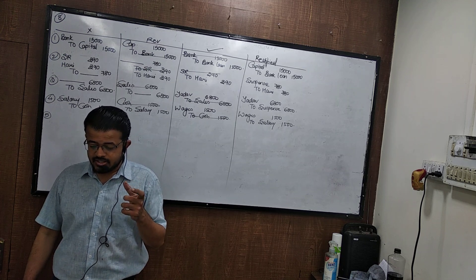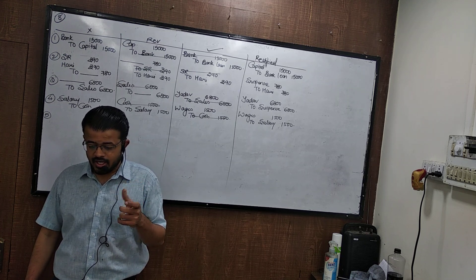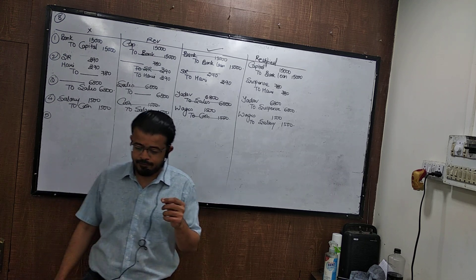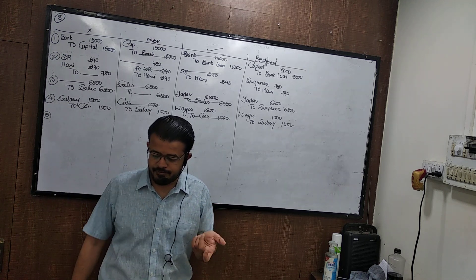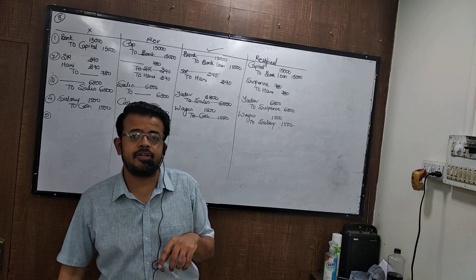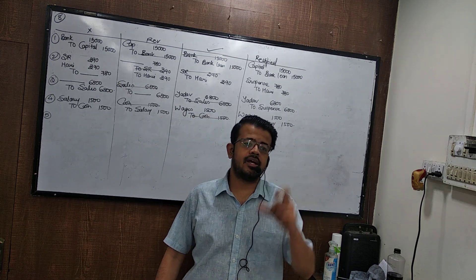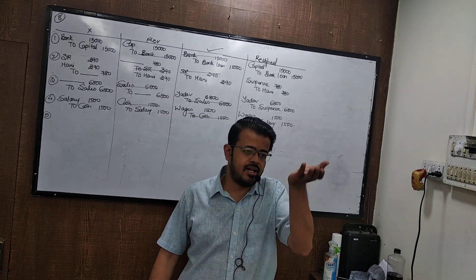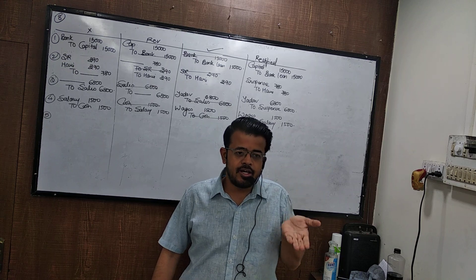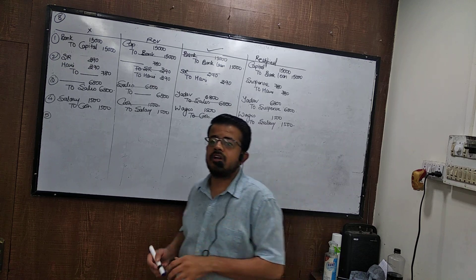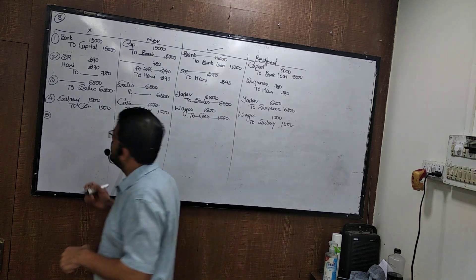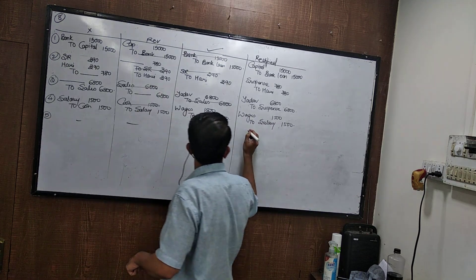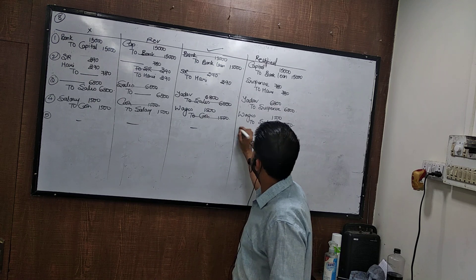Cash purchases of 8300 from Shiddi Traders were debited to Shiddi Traders account. The correct entry is purchase to cash. Wrong entry is Shiddi to cash. Reverse is cash to Shiddi, and rectified is purchase to Shiddi. All were mostly errors of principle — some were errors of commission.